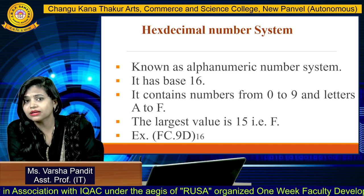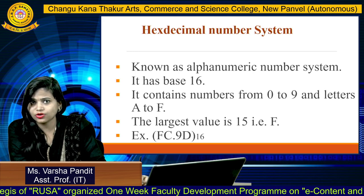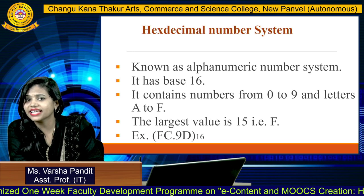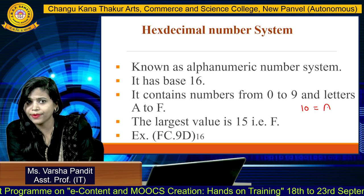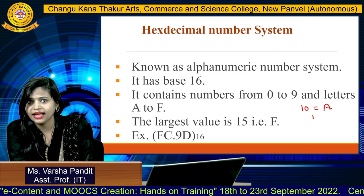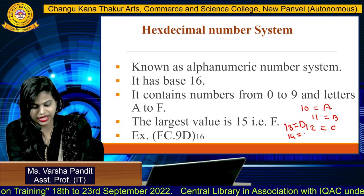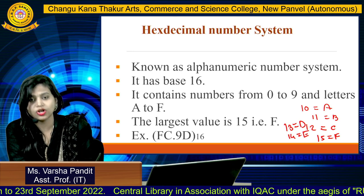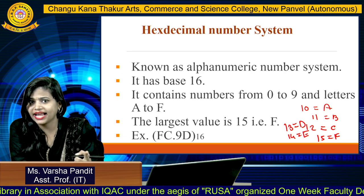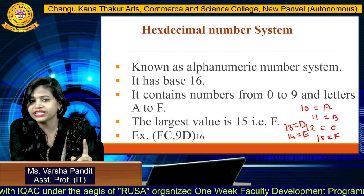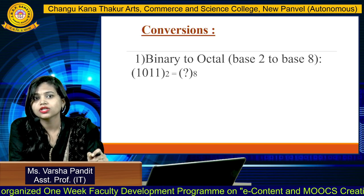The hexadecimal number system has a base value of 16. It is known as an alphanumeric number system because it contains both numbers and alphabets. It contains numbers from 0 to 9 and letters A to F. For example, 10 is represented by capital A, 11 by B, 12 by C, 13 by D, 14 by E, and 15 by F. So the largest value of hexadecimal is 15, denoted by F. An example is FC0.90 base 16, which is a combination of numbers and alphabets.